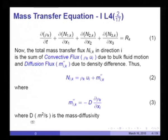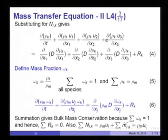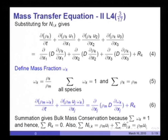If I substitute for N_ik for each of these terms, I can rewrite the equation as: dρ_k/dt + d(ρ_k·u₁)/dx₁ + ... = d/dx₁(D · dρ_k/dx₁) + likewise in directions 2 and 3, plus r_k.